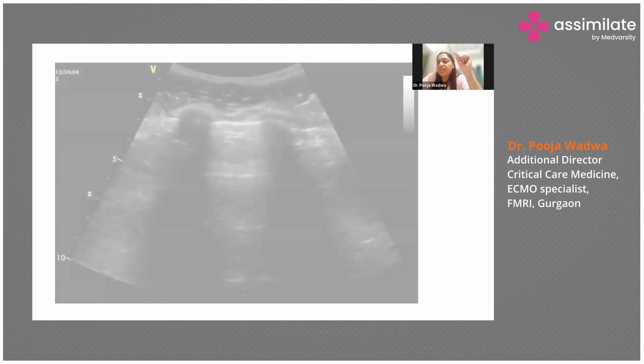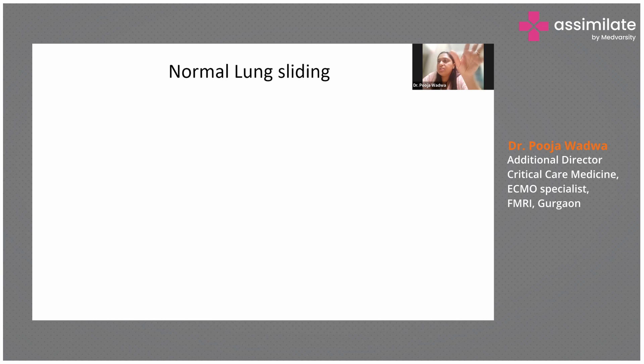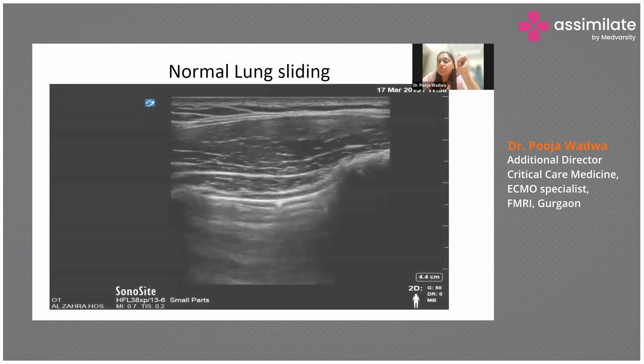This is a real-time image showing A-lines, which you may see in a normal lung or a COPD lung — this represents normal lung sliding.